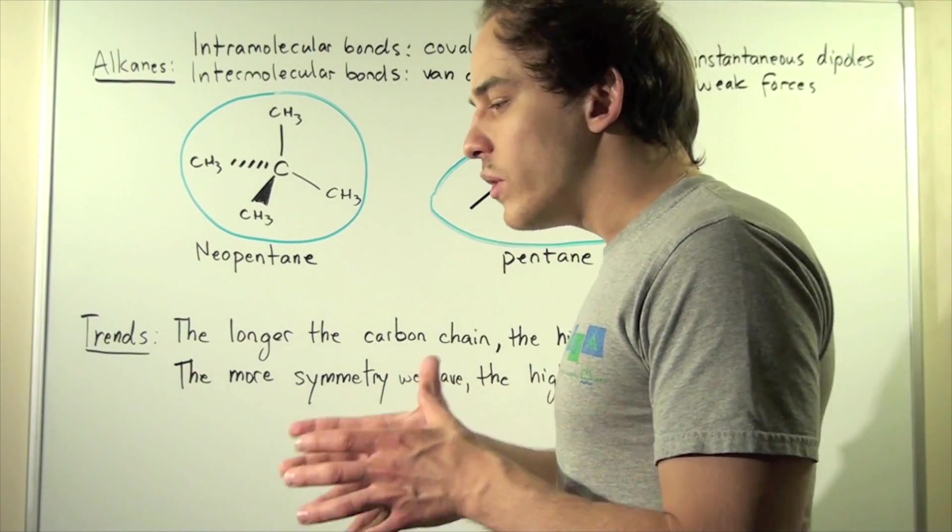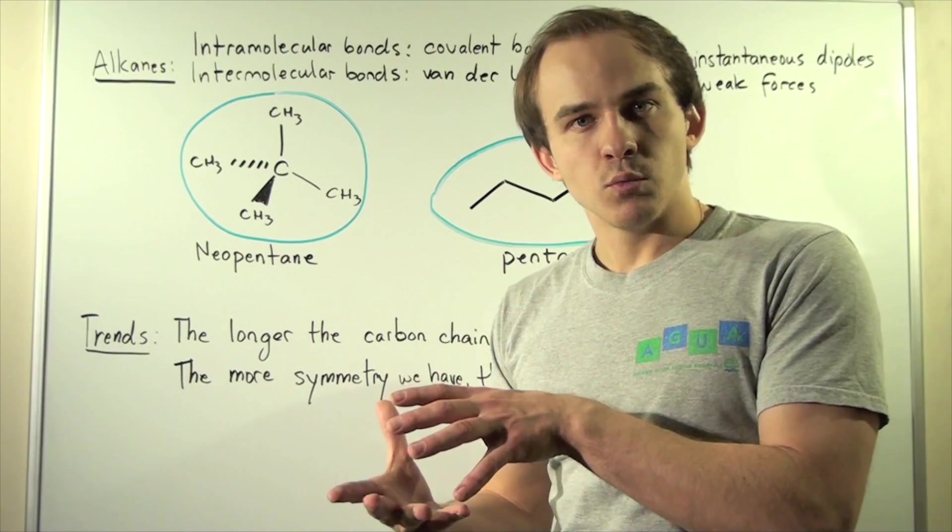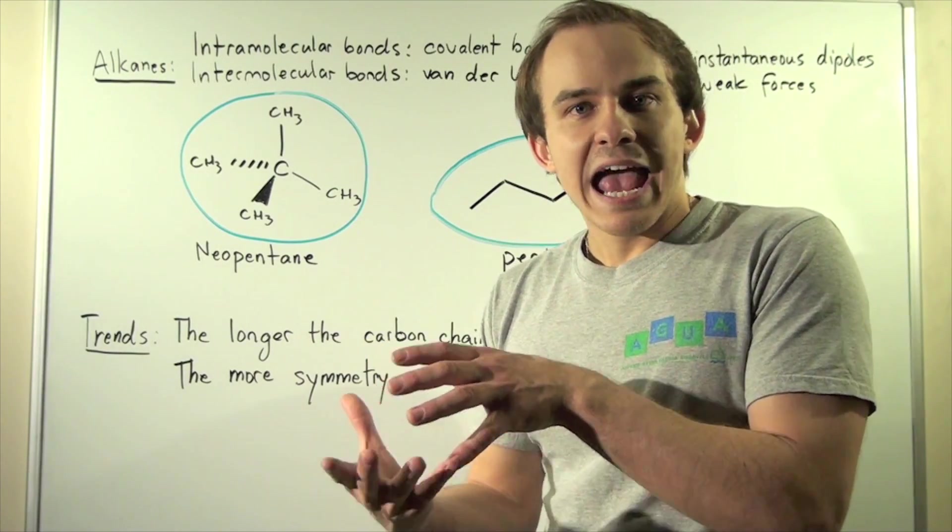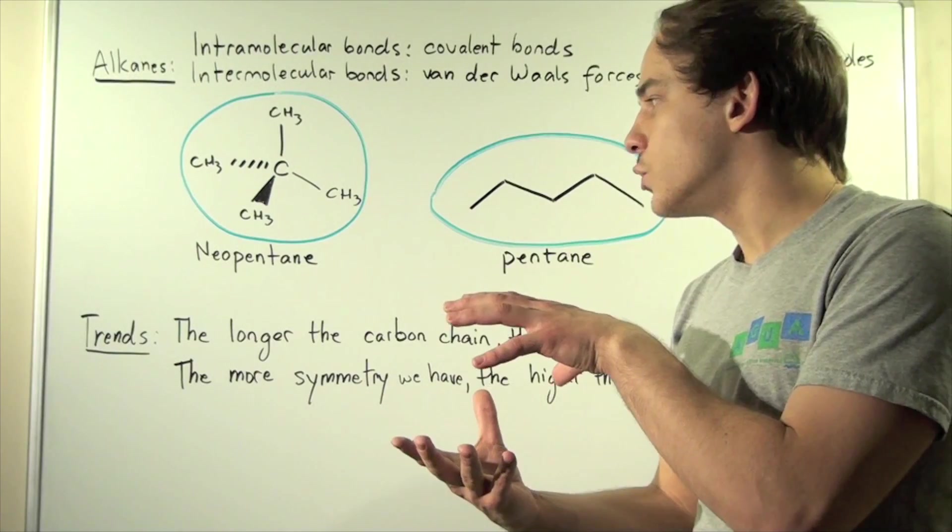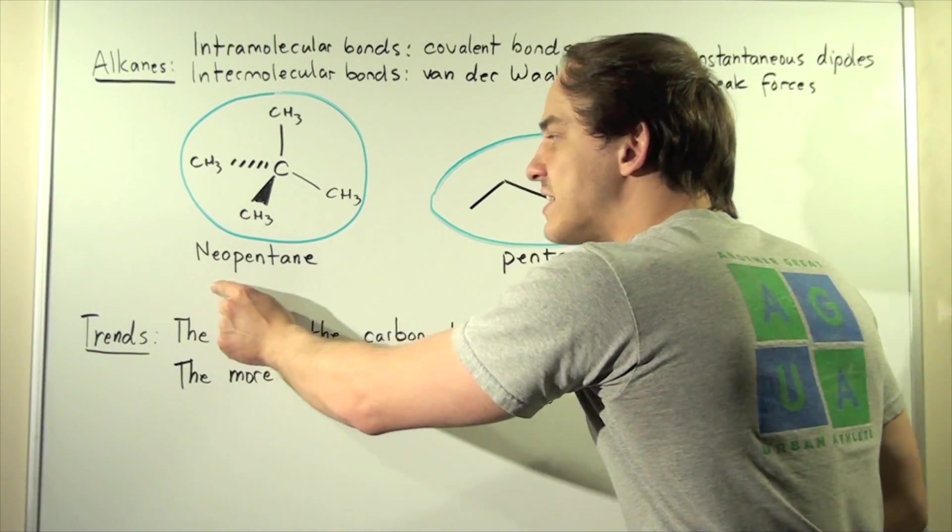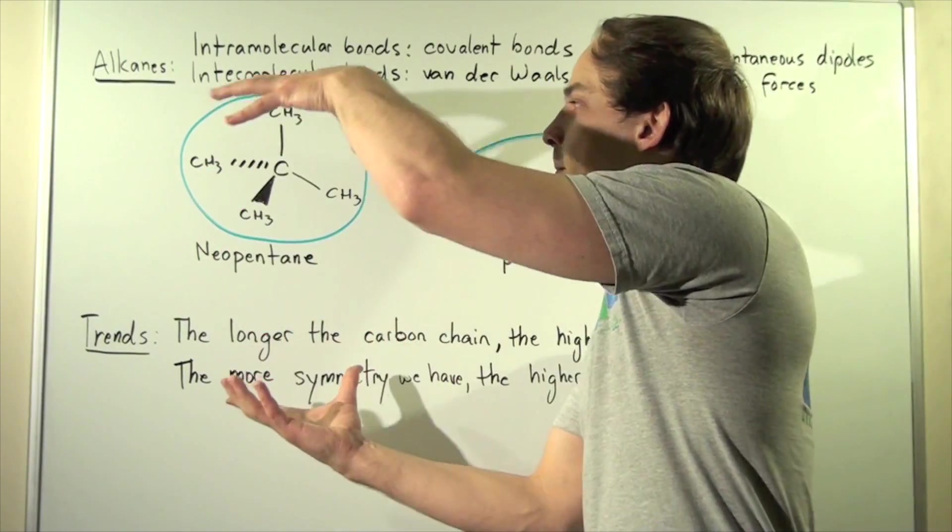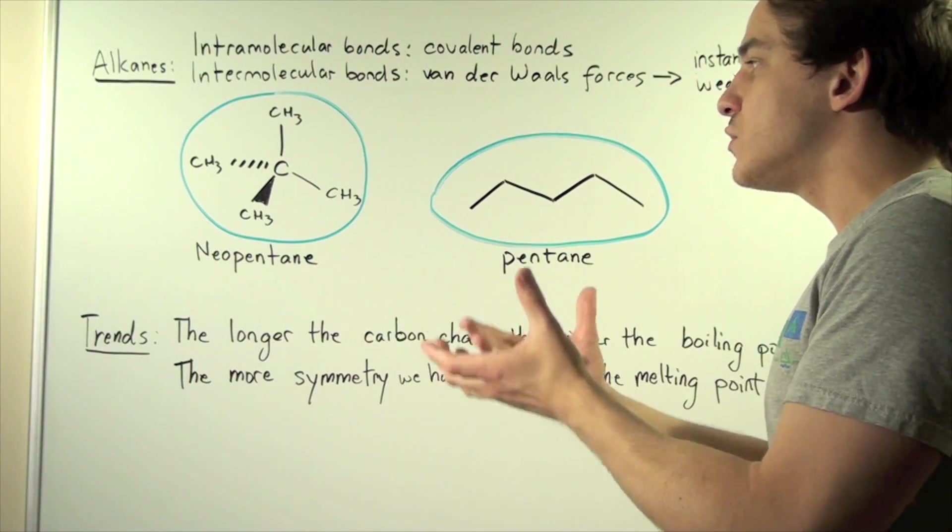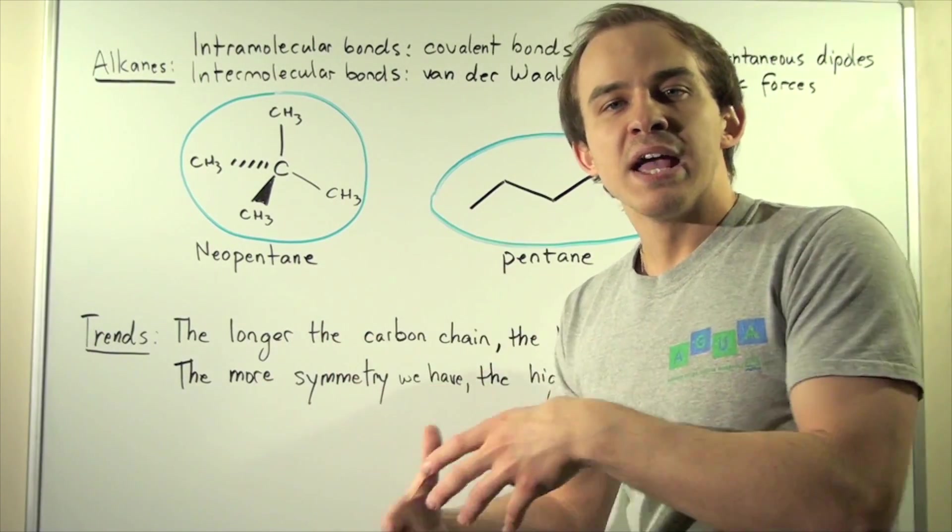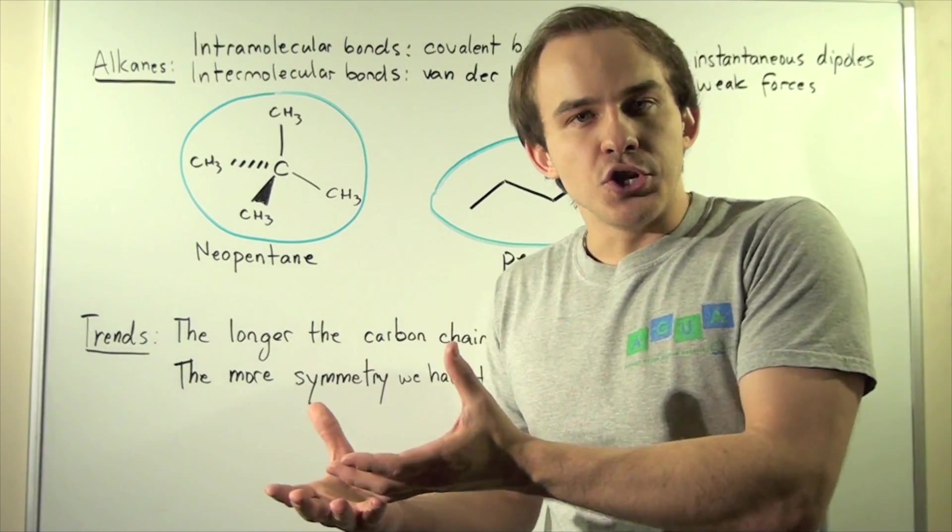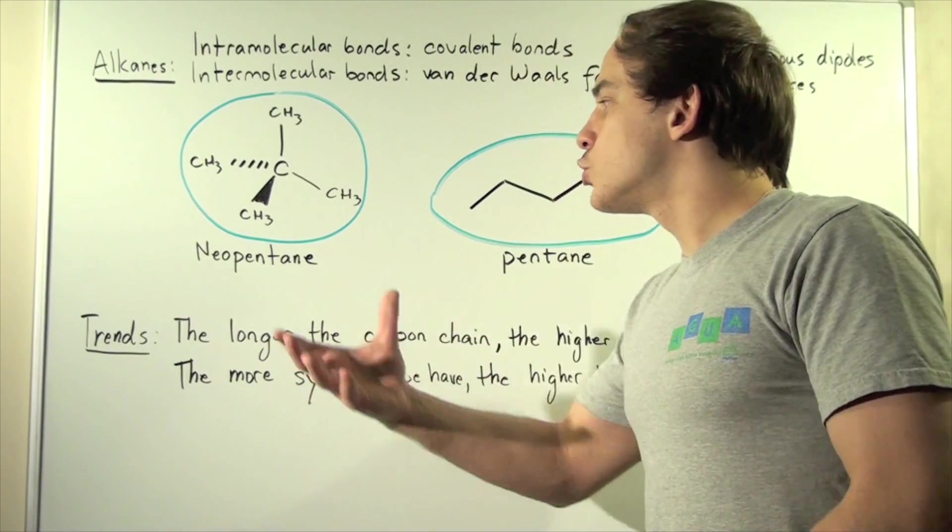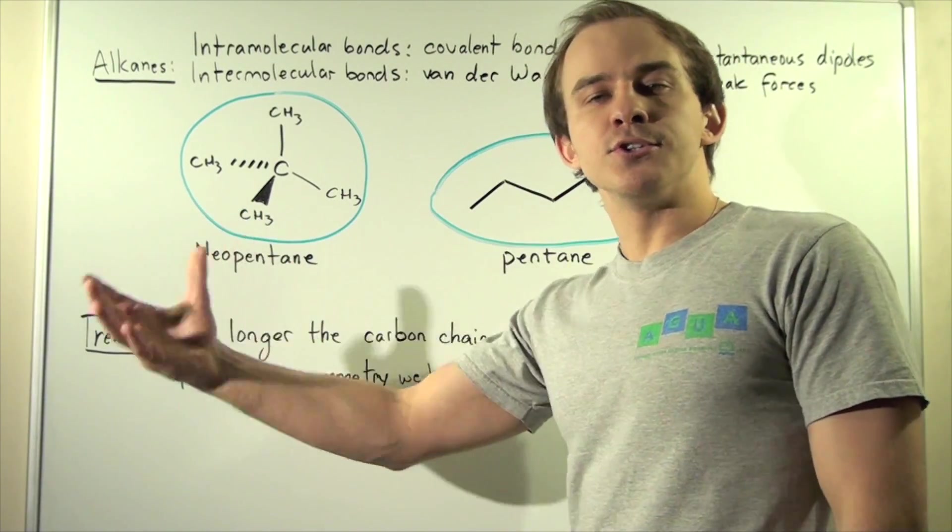Well, in a solid, we have a lot of symmetry, right? We have a crystal lattice and very well structured molecules. So because this has more symmetry, it's more compact, it will be able to form a better solid. And that means more energy needs to be inputted to break the solid and turn it into liquid.